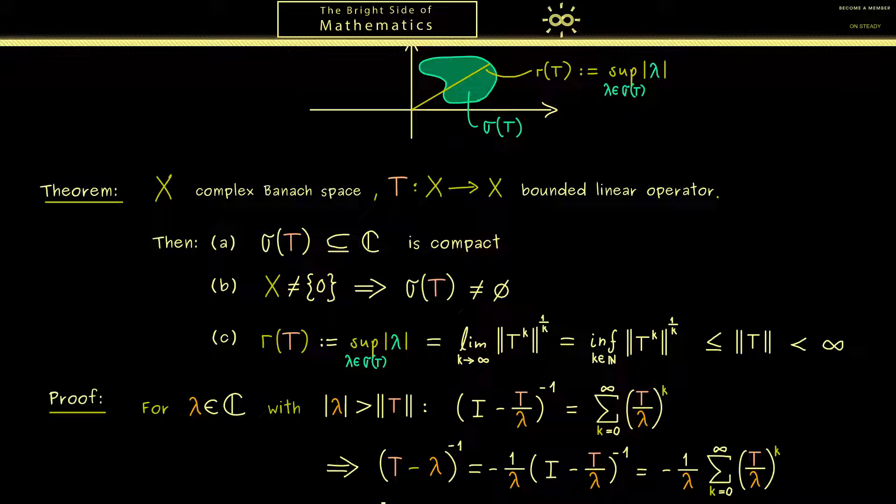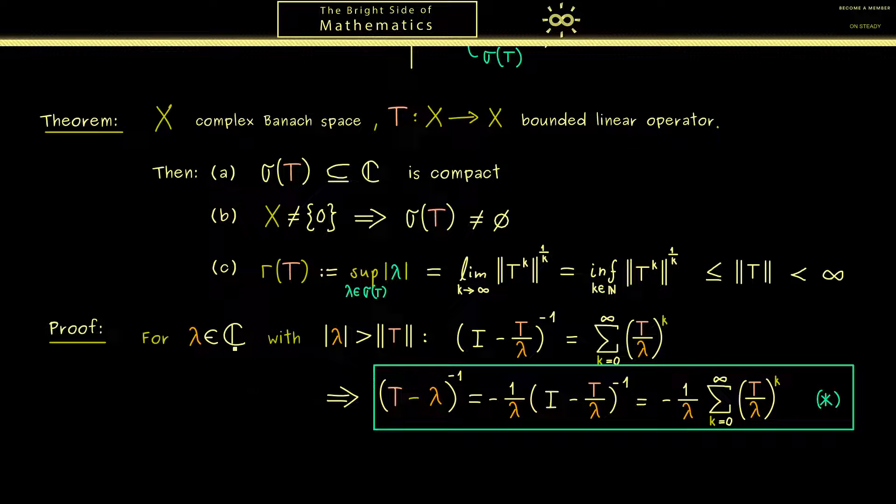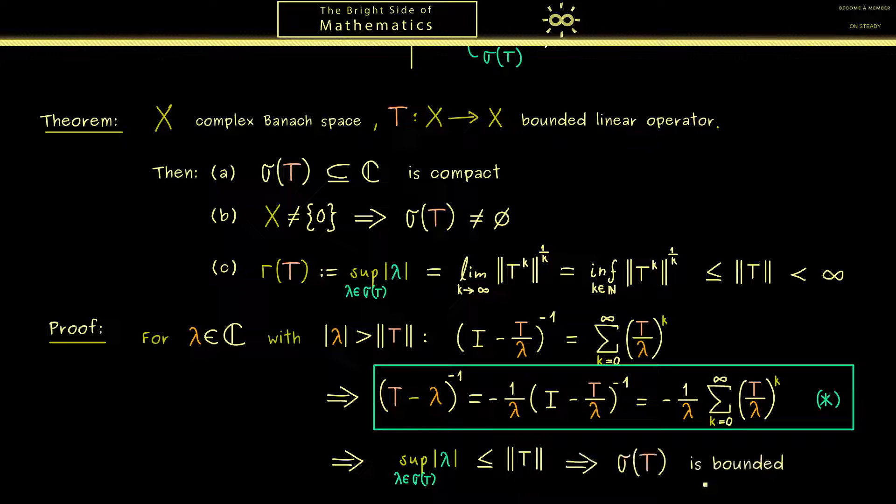Of course the important result is this inverse exists as a bounded linear operator. Moreover I would say you should also remember this formula here that holds for lambda that are large enough. Okay, now we conclude this lambda here is not in the spectrum. Therefore this supremum here is indeed less or equal than the operator norm of T. In addition this implies that the spectrum of T is bounded. And I already told you we know from the last video that the set is closed. Therefore we have proven part a. Additionally you see that one part of c is also already proven.